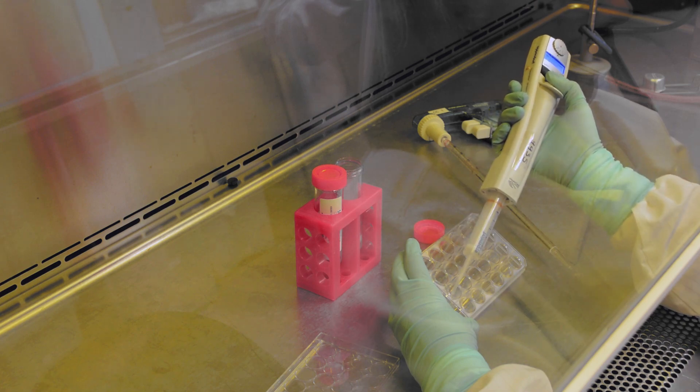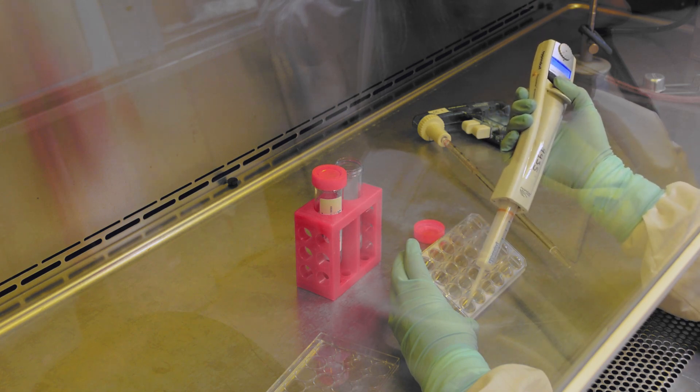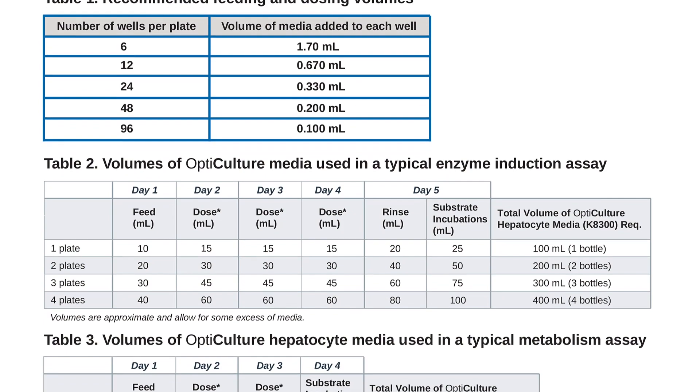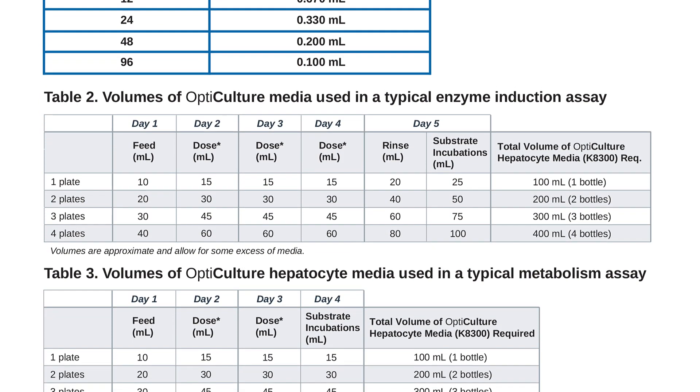For culturing hepatocytes, the culture vessel must have a collagen-1 coating. Set your single channel pipette or repeater to the recommended seeding volume.